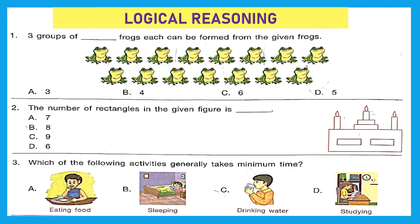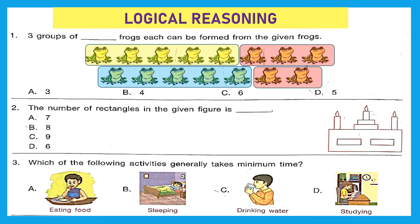Question 1: Three groups of dash frogs each can be formed from the given frogs. We have to make three groups and distribute frogs equally. Counting the frogs, there are 15 in total. If we make five frogs per group, we get exactly three groups. First group, second group, third group — three groups of five frogs. Option D is the right answer.